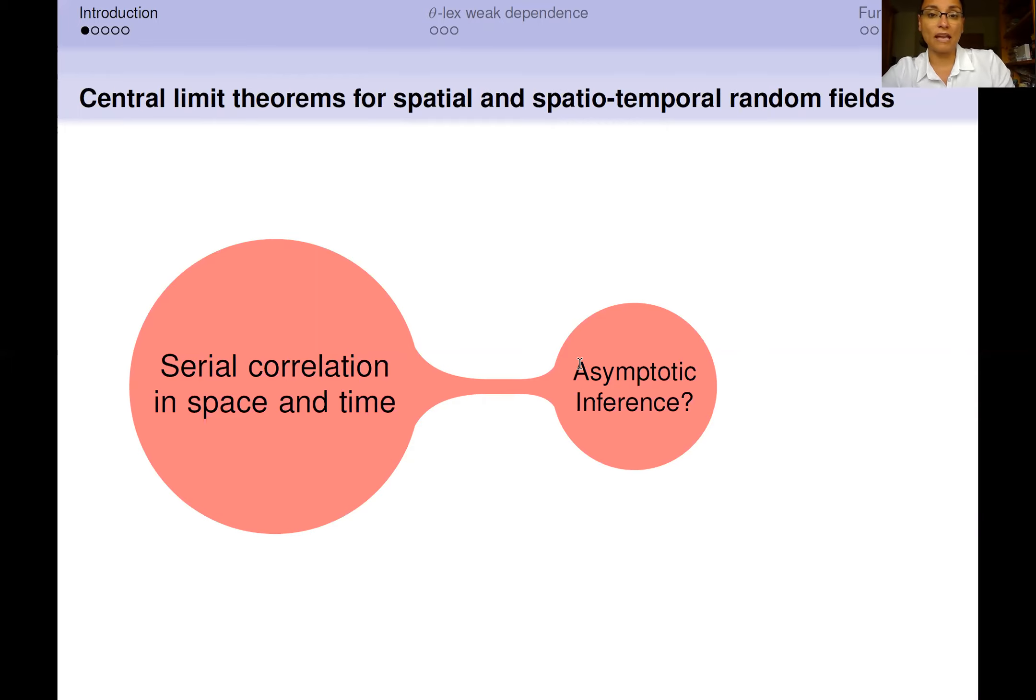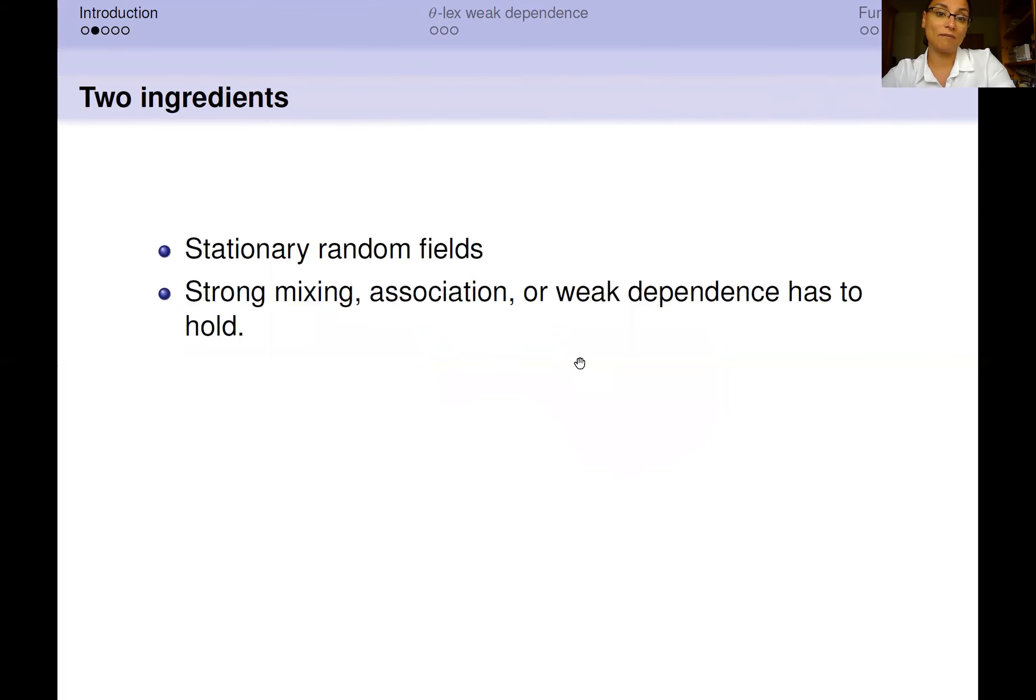This kind of feature can create several problems when we want to determine a central limit theorem simply because classical central limit theorems do not work under this kind of assumptions. Therefore, in the literature, there have been investigated different methodologies to overcome this bottleneck.